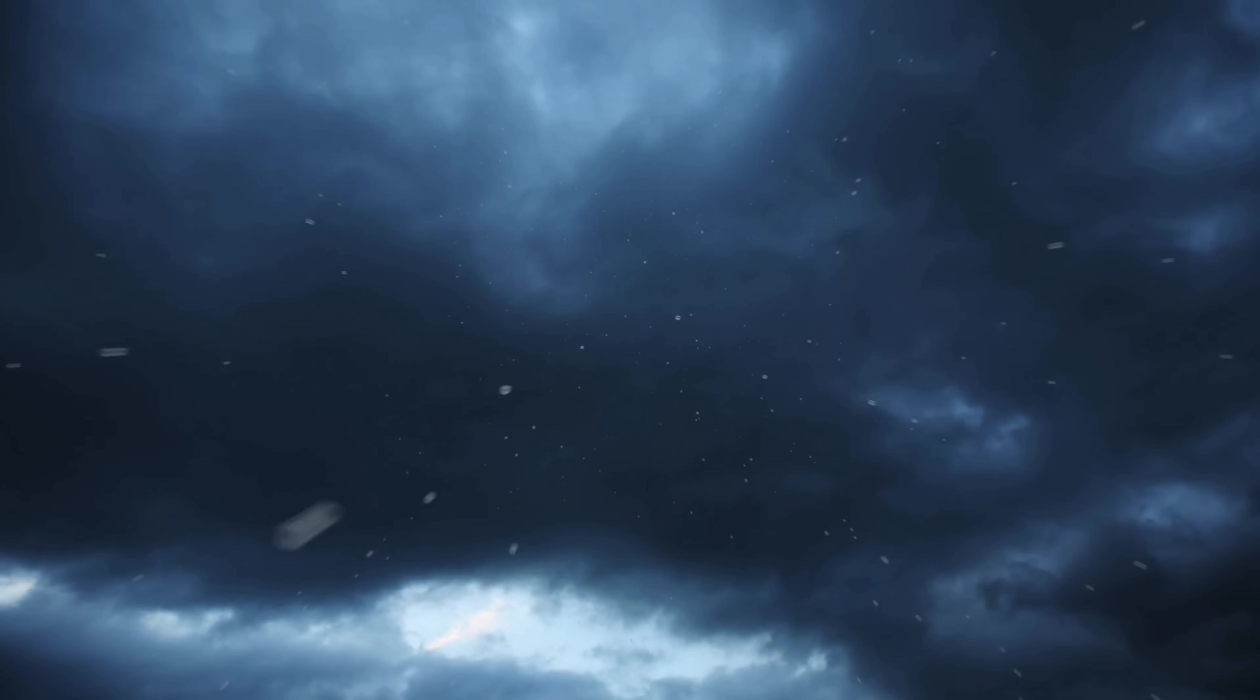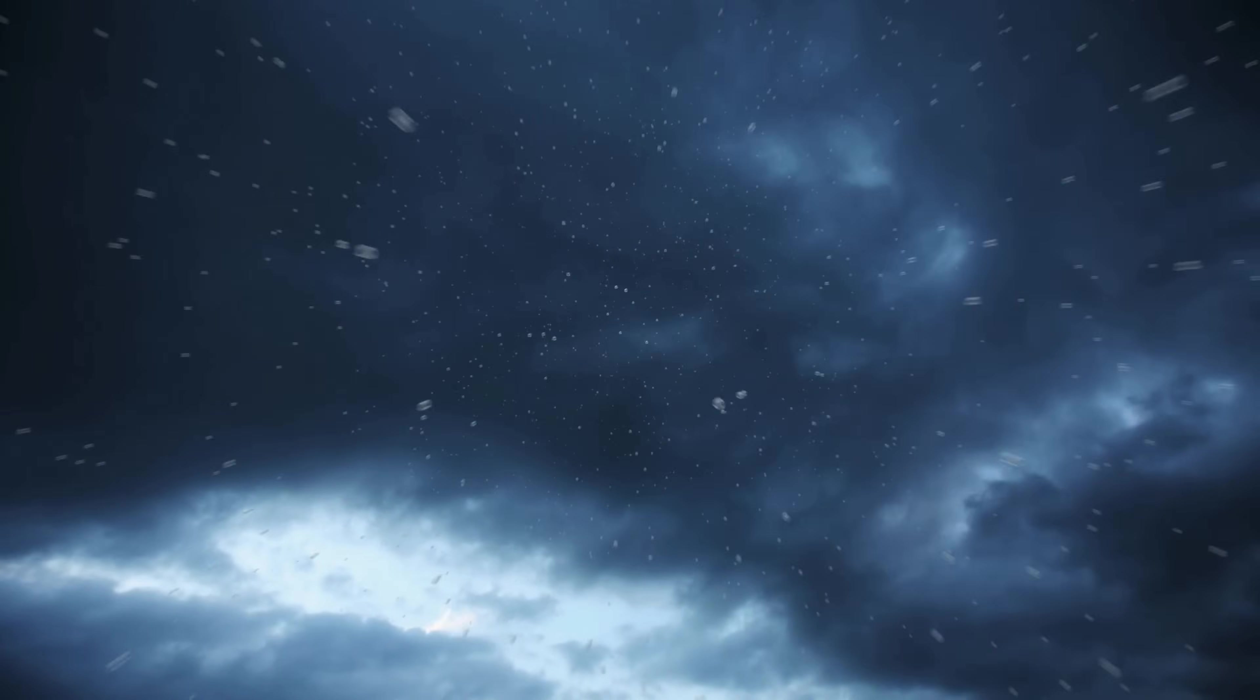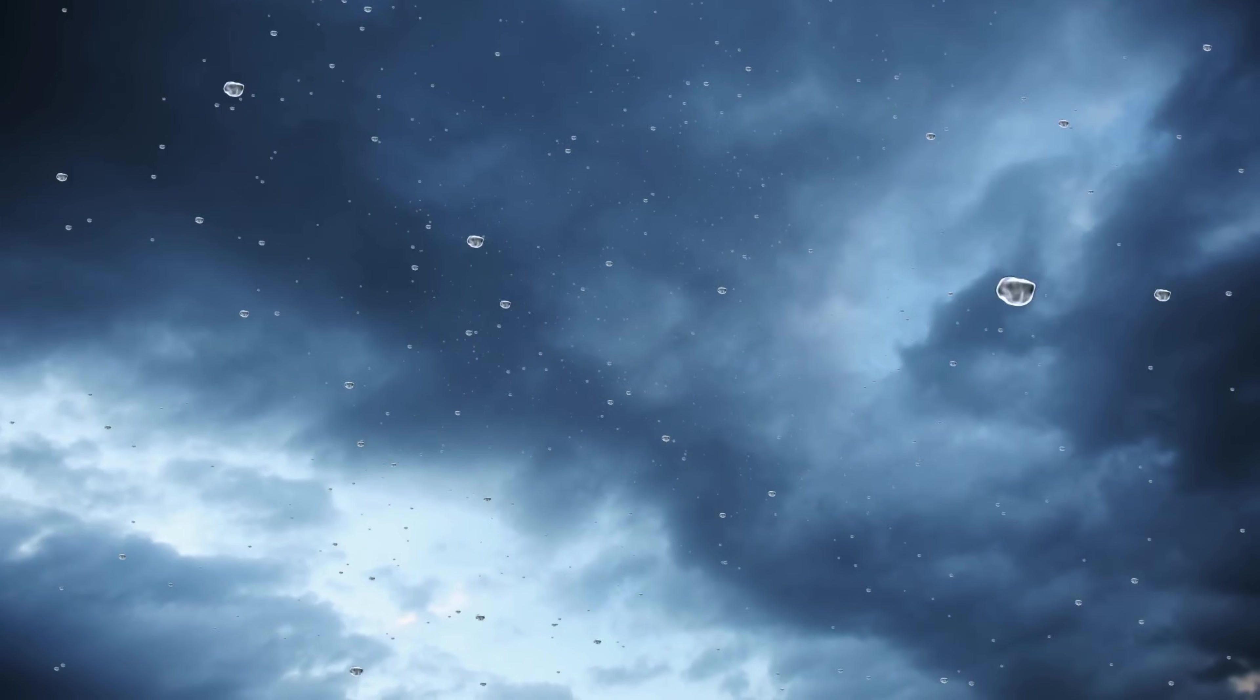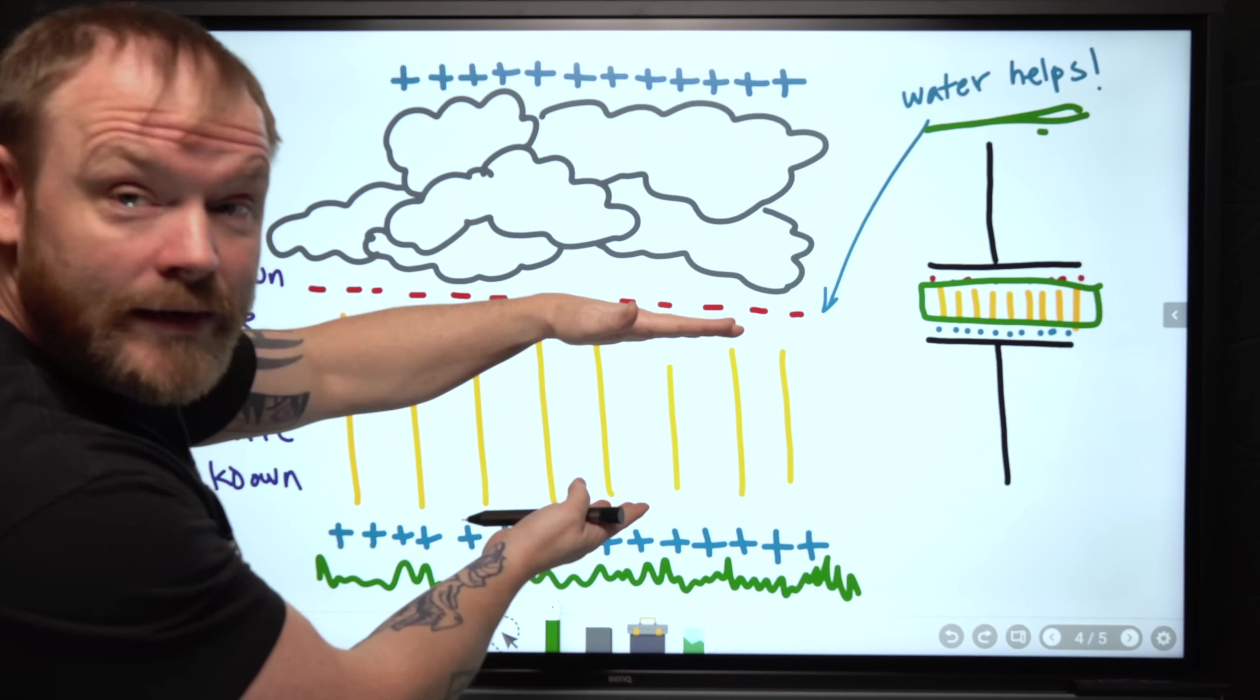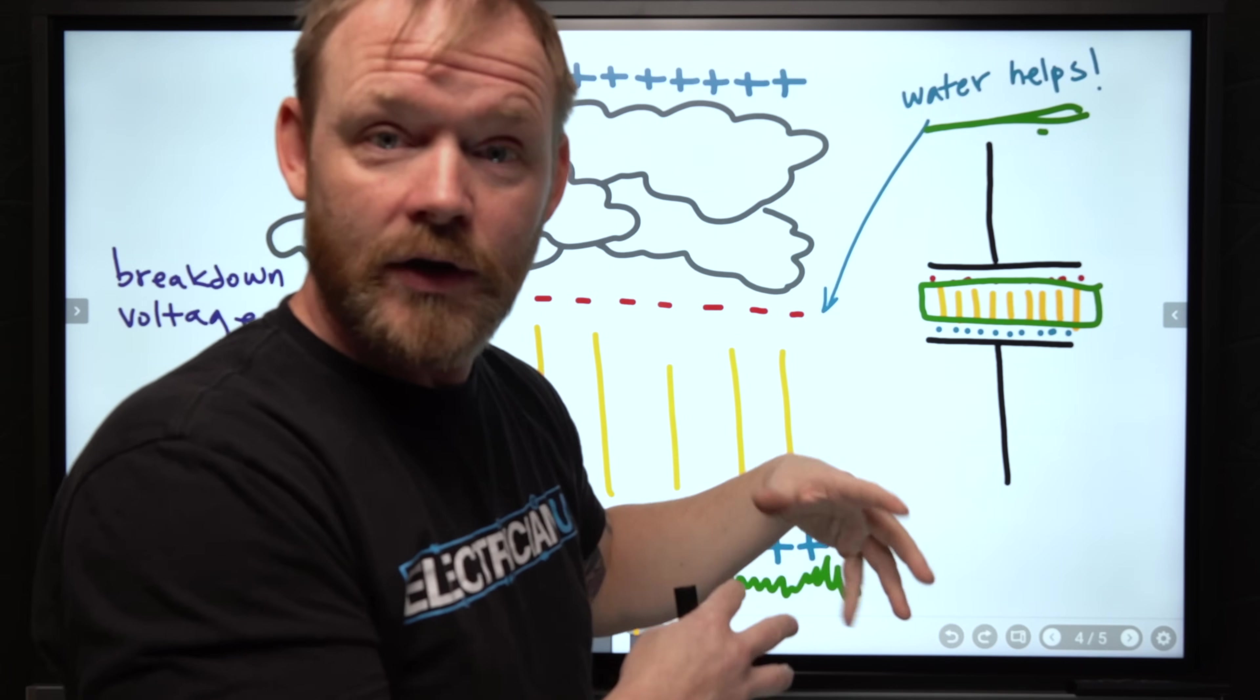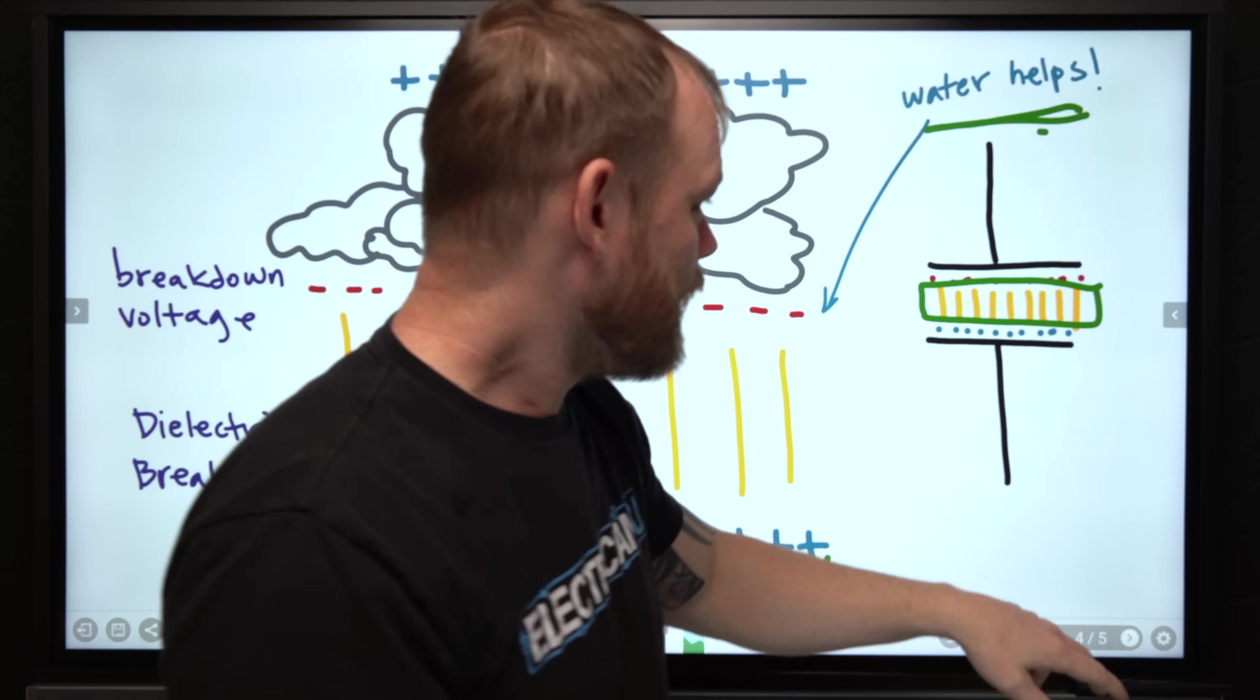Now what's interesting too is that water helps a lot. So when you have moist air, which is why a lot of thunder clouds and all that stuff happens when it's raining, you actually lower the amount of breakdown voltage that's necessary to be able to break down that dielectric and get through. So that's why it's working, but there's not actually current flowing through.